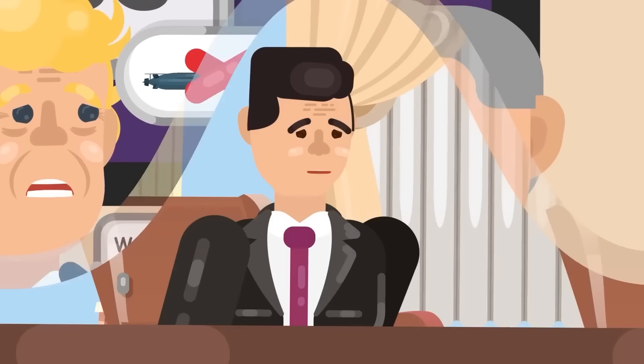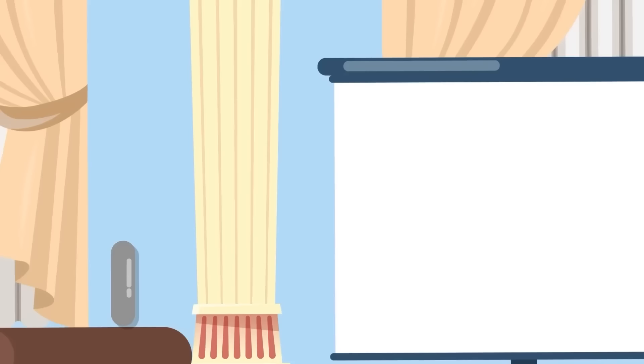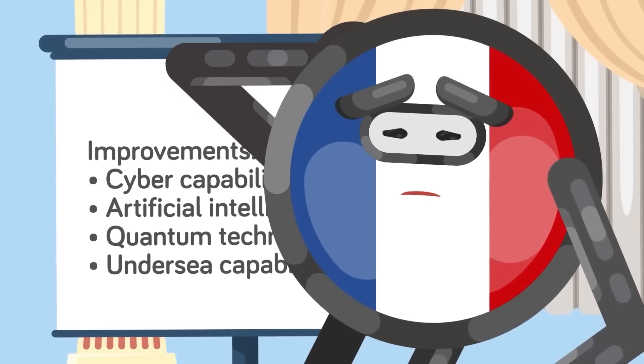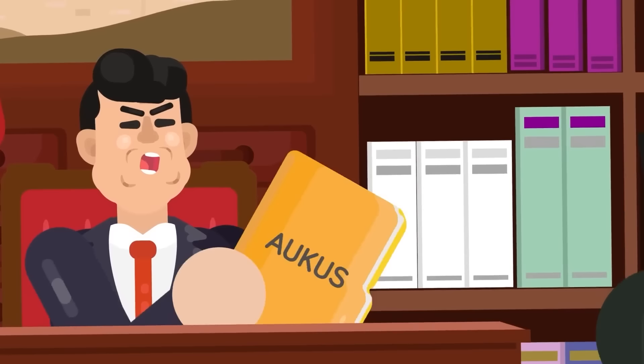AUKUS started under the guise of a joint capabilities and interoperability agreement, although when the new alliance was explained further, it was shown to include improving cyber capabilities, artificial intelligence, quantum technologies, and additional undersea capabilities. The undersea capabilities are likely the part that caught France's attention. However, everything else on the list was bad news for China, which is why when AUKUS was announced, it wasn't just France that was voicing its discontent. China was right there with them.